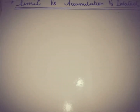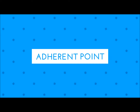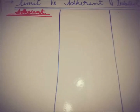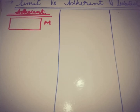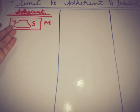Hello everyone, this is Da from eAcademy and today we are going to see the difference between limit, adherent, and isolated points. Firstly, I'm going to talk about adherent points. If we have a metric space M and a subset of that metric space represented by S, and we have a point x from M that is outside the subset S.